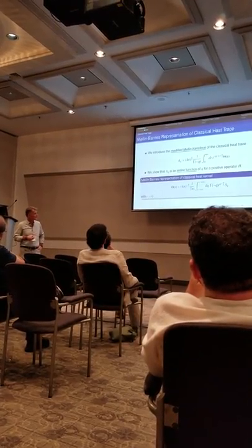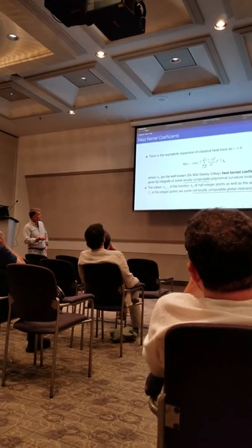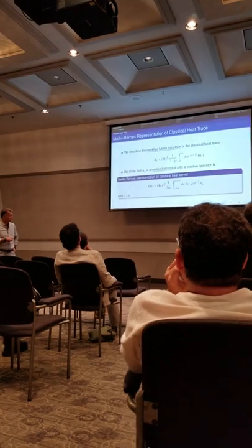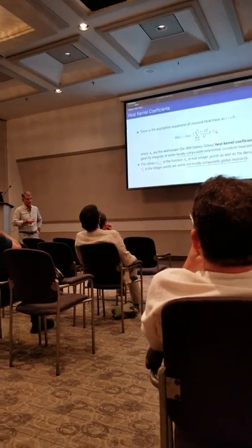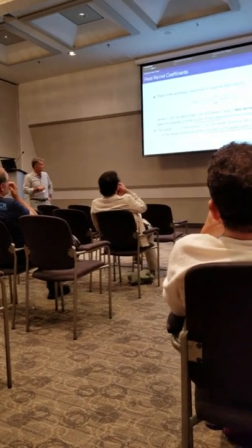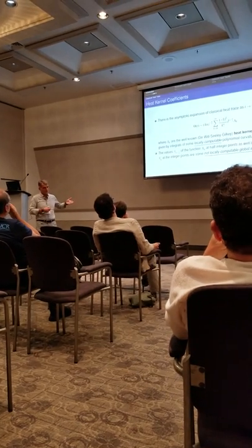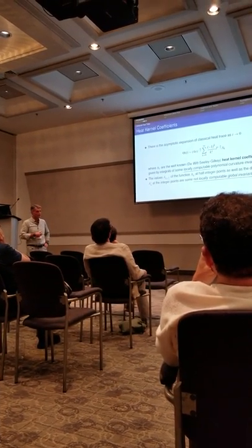Notice the presence of the gamma function, which has poles at positive integer values of q. By moving the contour of integration to the right, we pick up all the poles coming from the gamma function, which gives the well-known asymptotic expansion of the classical heat trace. The coefficients — sometimes called Seeley-DeWitt or heat kernel coefficients — are locally computable polynomial expressions in the curvature. The first is just the volume, the second is the integral of scalar curvature, and the third is an integral of higher-order curvature invariants. They are known up to A4 and A5 in some cases.